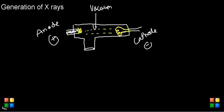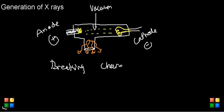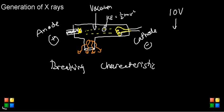When electrons interact with the anode material, we get x-ray photons through two main mechanisms: breaking radiation and characteristic radiation. It's also important to understand that these electrons are moving and have kinetic energy. The greater the voltage difference between the anode and cathode, the faster the electrons move. For example, 10 volts gives 10 electron volts of kinetic energy per electron, and 20 volts gives 20 electron volts.